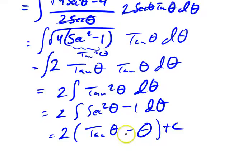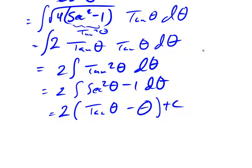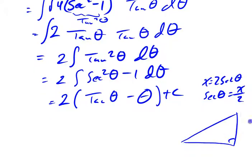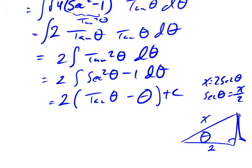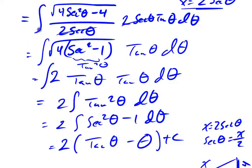Now, I didn't start in thetas, so I don't end in thetas — I've got to go back. My substitution was x equals 2 secant theta. I think of that as secant theta equals x divided by 2, because that draws me a picture where the angle is theta, and the secant — hypotenuse over adjacent — equals x divided by 2. So if I make this side x and that side 2, then the secant of this angle is precisely what it needs to be. I can then use Pythagoras to get the other side: the square root of x squared minus 4. And that's exactly the square root I had to start with — so I feel like I've done the right substitution.